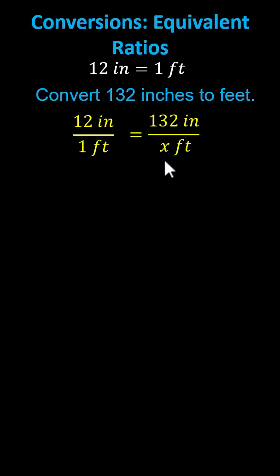And now to determine the ratio on the right, which must be equivalent to 12 inches to one foot, we need to determine what times 12 inches is equal to 132 inches. So if we're not sure what to multiply by, we can always take 132 and divide by 12, which is 11.